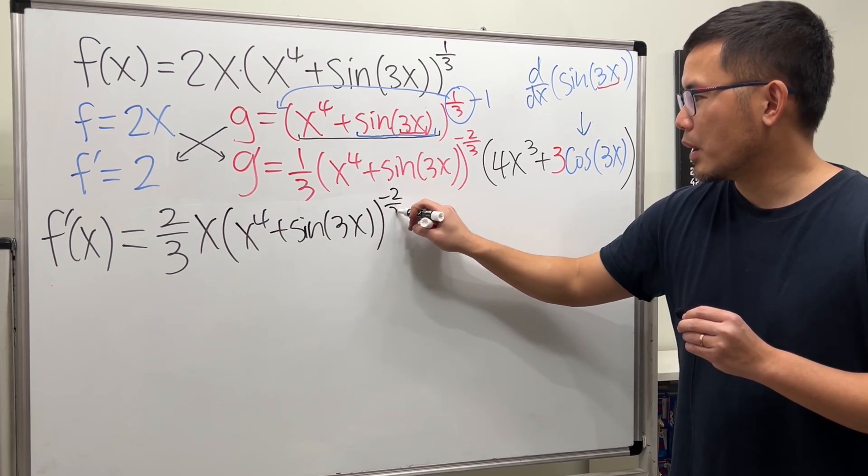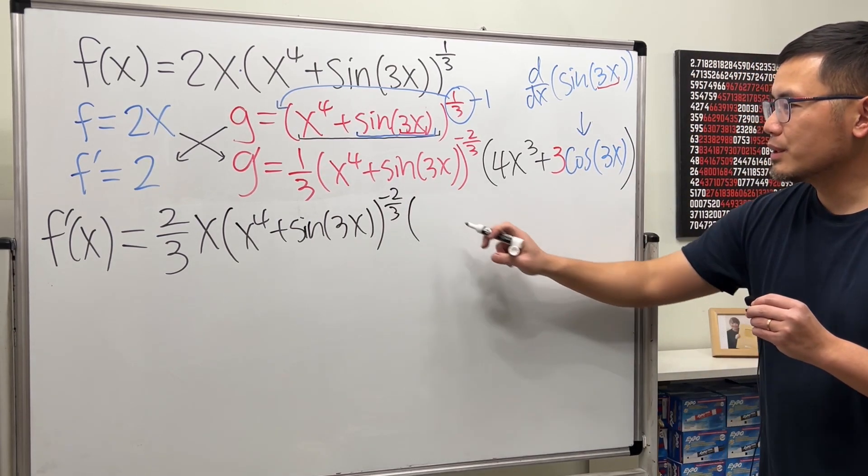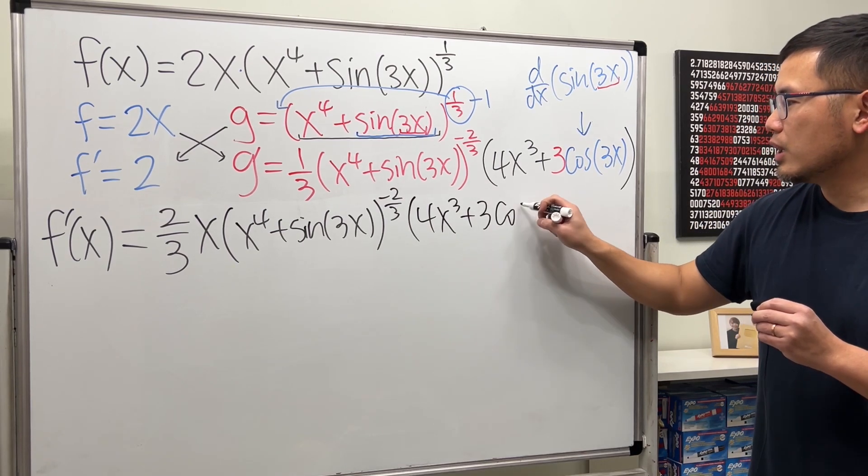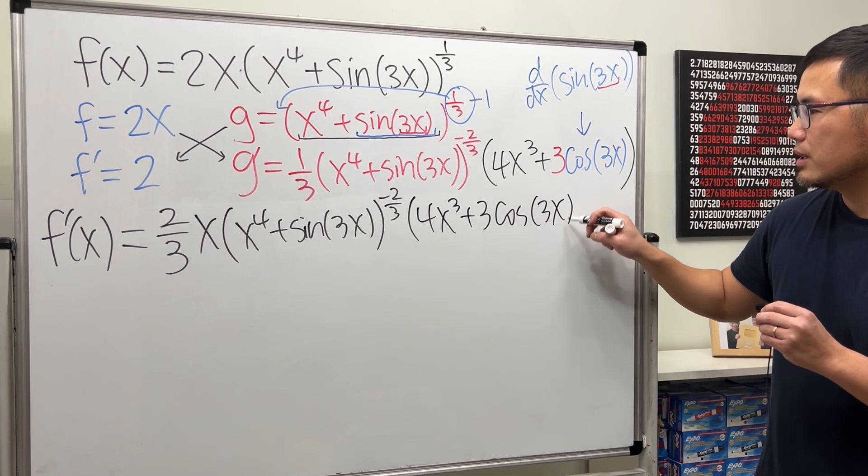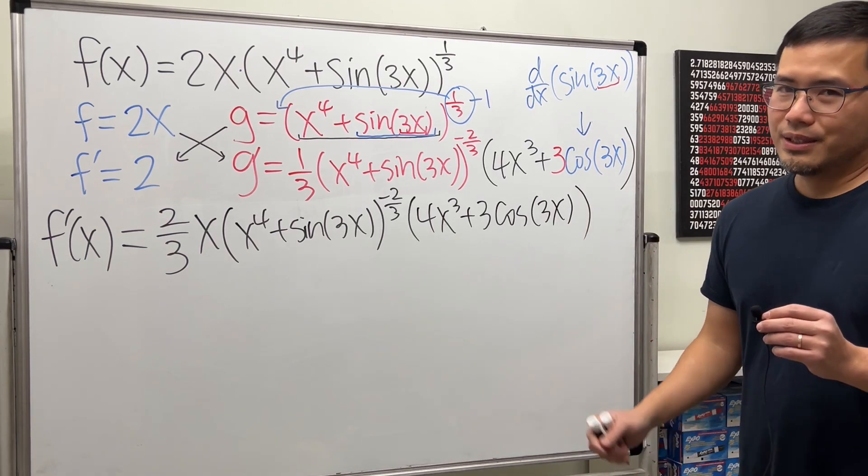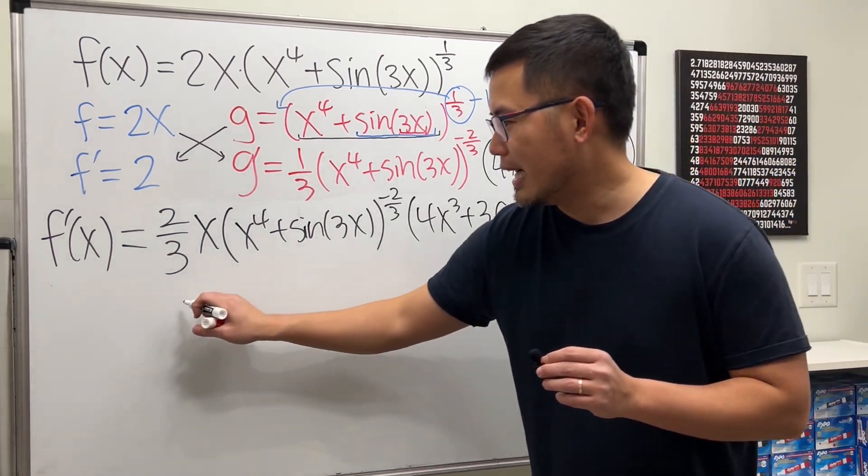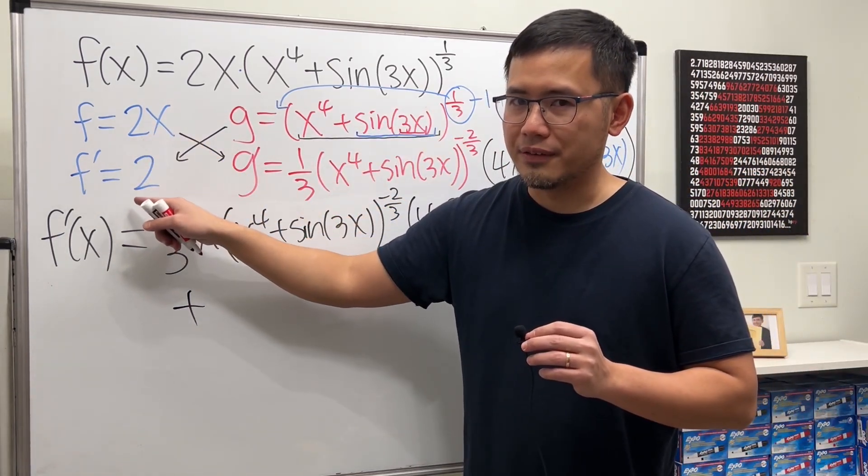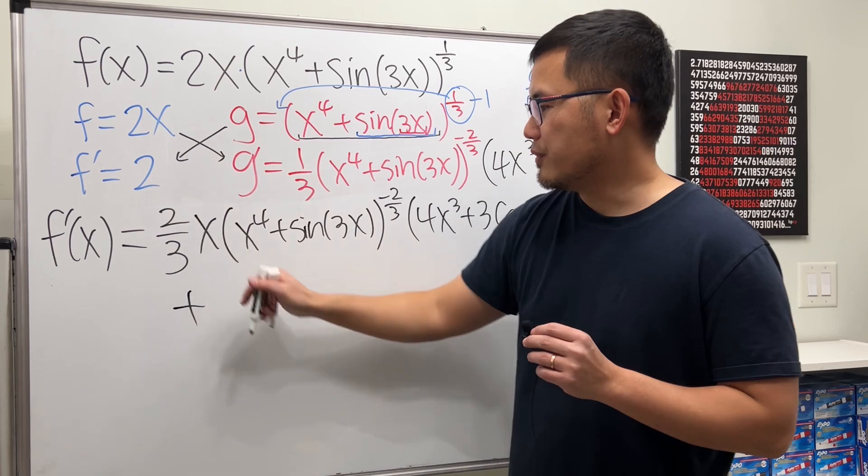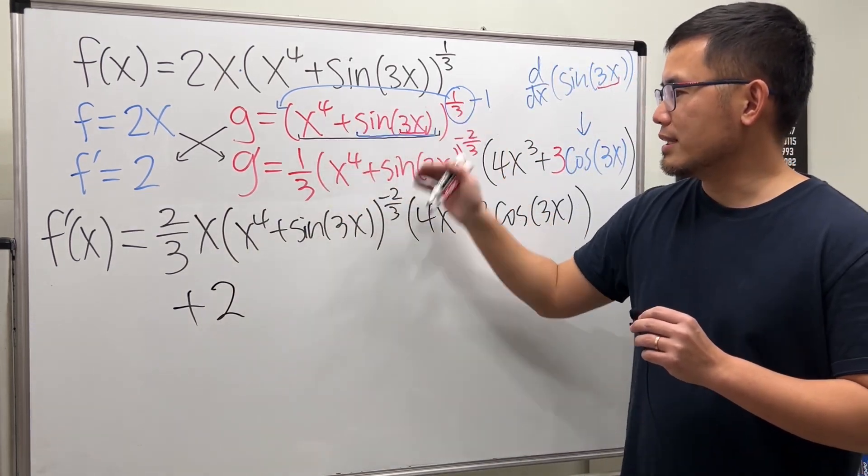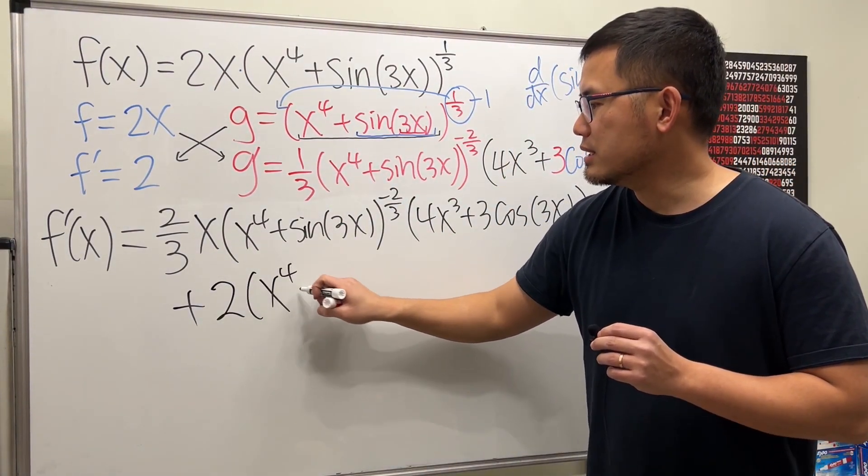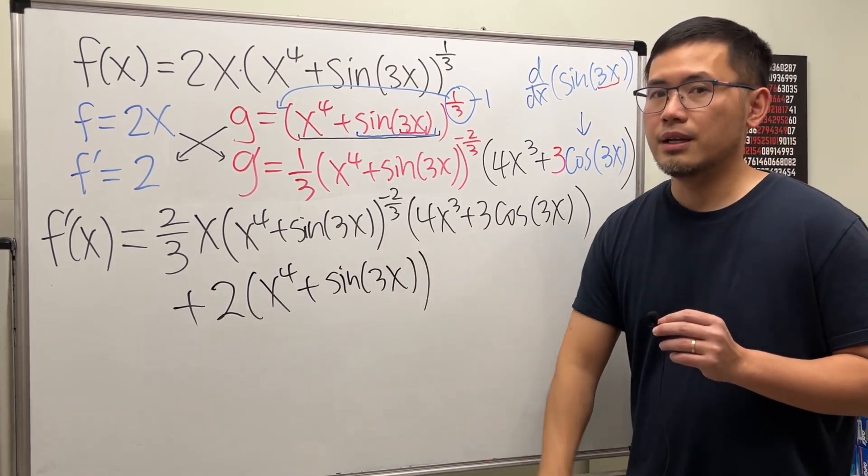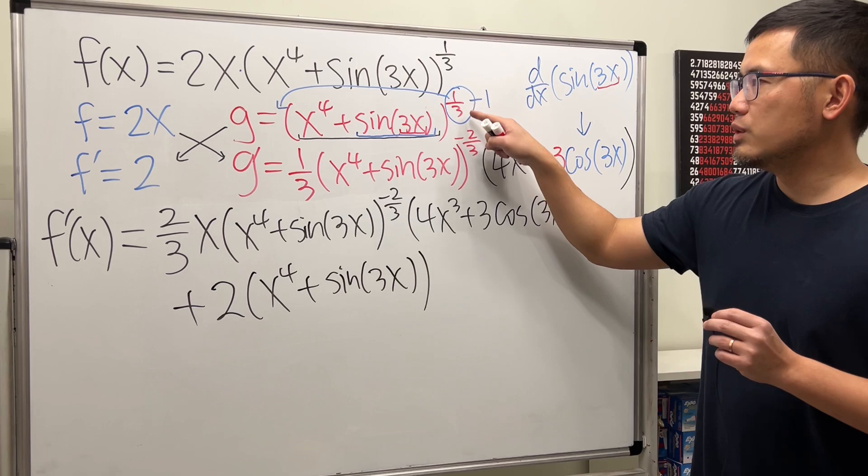Raised to the negative 2 thirds power. Times all that. Which is 4x to the third power plus 3 cosine of 3x. Close. Close. Okay. And then we have to add the original g function times the derivative of the blue f. So let's put down 2 first right here. And then the rest. Which is x to the fourth plus sine of 3x. And then raised to the positive 1 third power.